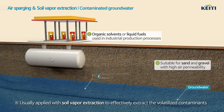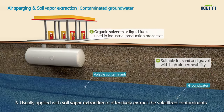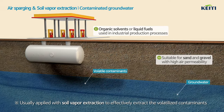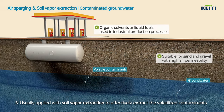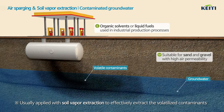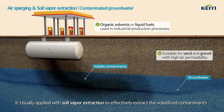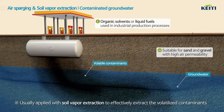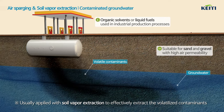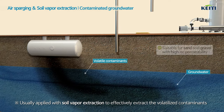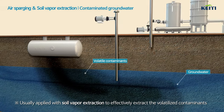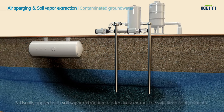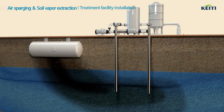Air Sparging is a remediation technique used to treat groundwater and soil contaminated by volatile contaminants, which are organic solvents used in painting facilities, cleaning facilities, laundry facilities and road pavement, and liquid fuels stored in gas stations and oil reservoirs.